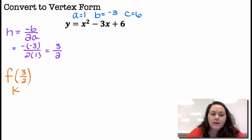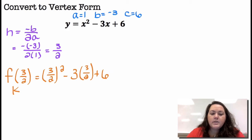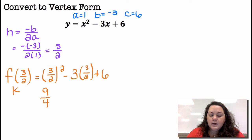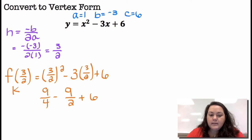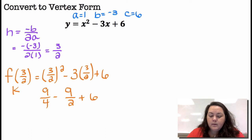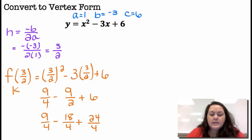Then I'm going to plug that in to find K — F of 3 halves. So it's 3 halves squared minus 3 times 3 halves plus 6. 3 halves squared gives me 9 fourths, and 3 times 3 halves gives me 9 halves, plus 6. Making the common denominator 4: that's 9 fourths minus 18 fourths minus 24 fourths, which gives me 15 fourths.